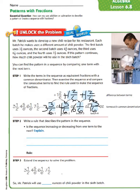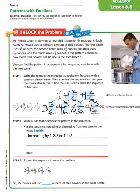Step 2 says to write a rule that describes the pattern in the sequence. Is the sequence increasing or decreasing from one term to the next? We see that the terms are increasing by 1 and 2/6, or 1 and 1/3. So therefore, the rule would be to add 1 and 2/6.